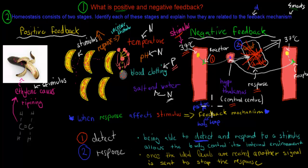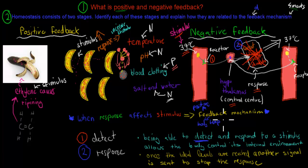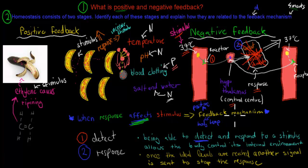When it comes to feedback mechanisms in your exams, you need to be able to remember the temperature example, because that's one you could be asked to diagram. The feedback mechanism is quite general and can apply to temperature, pH, blood clotting, or salt and water balance. But in exams, you won't be asked to draw a diagram of pH, blood clotting, or salt and water — you might be asked to draw the temperature one specifically, because there's a syllabus dot point which says to draw one. I hope that was useful. Thank you for the question — it was very good. If you have any other questions, feel free to leave them in the comments and I'll try to respond as soon as possible.